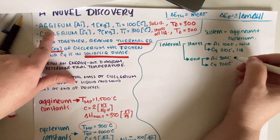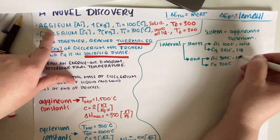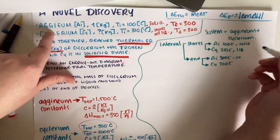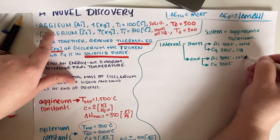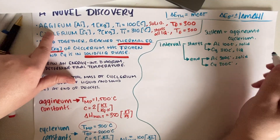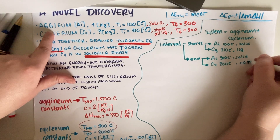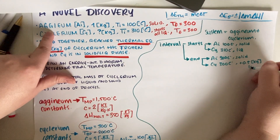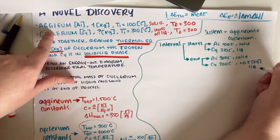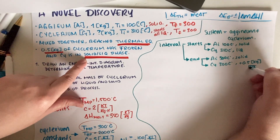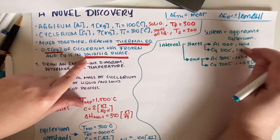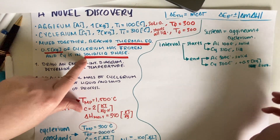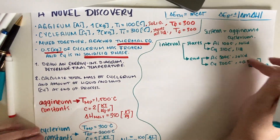At the end, aginium is still a solid because we never got anywhere near its 1500°C melting point. For cyclerium, 0.5 kilograms have frozen — it was liquid and 0.5 kg has transitioned to solid.